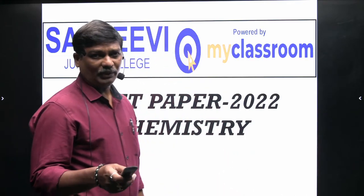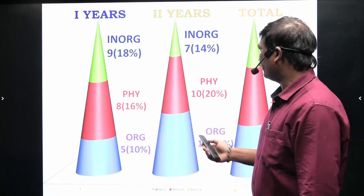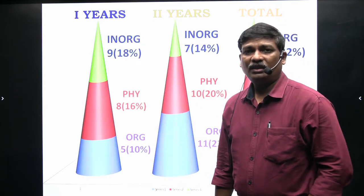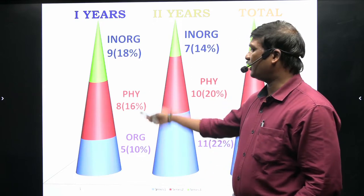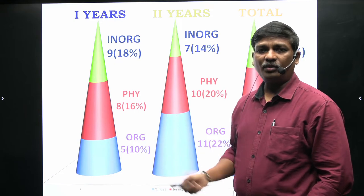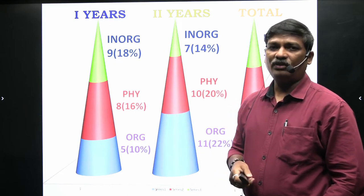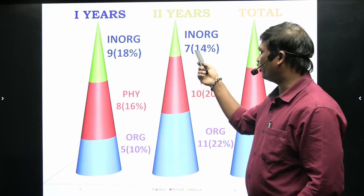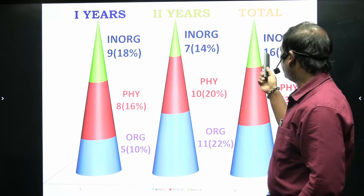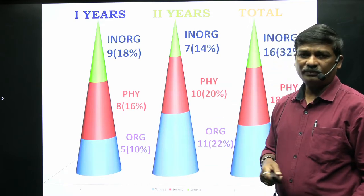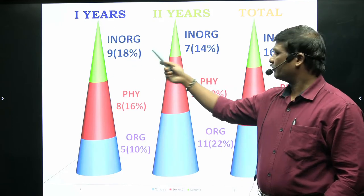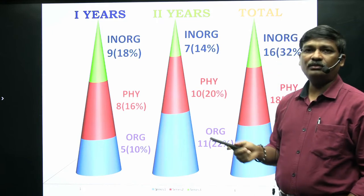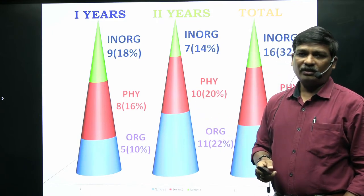Let's look at the types of questions from the NEET paper. This is the analysis across all three branches of chemistry. From inorganic chemistry, first year gave 9 questions (18%) and second year gave 7 questions (14%), totaling 16 questions — 32% of the paper.